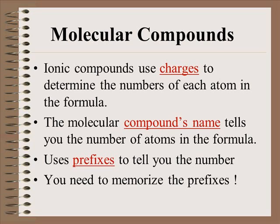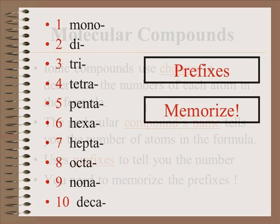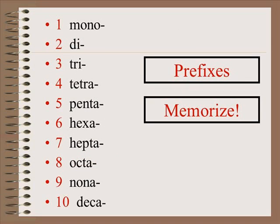When we write ionic compounds to figure out the ratio of those ions, we use the charges to determine the number of atoms in the formula. Your molecular compound's name is going to tell you the number of atoms and you're going to use prefixes in order to write the formula. So you're going to have to memorize these prefixes.